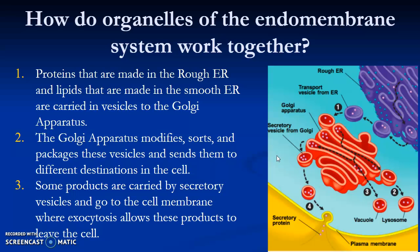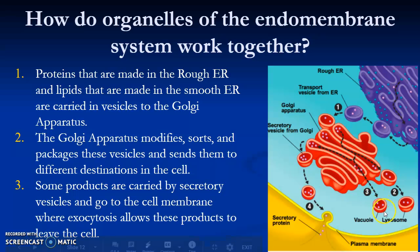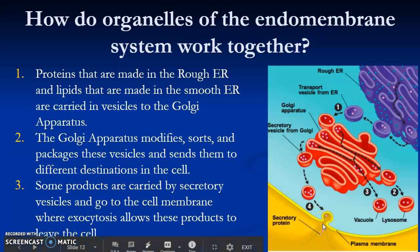Now that you've learned about all of these organelles, the question is: why are they relevant to the endomembrane system? It's teamwork — as they say, teamwork makes the dream work. The proteins made in the rough ER and the lipids made in the smooth ER are carried in transport vesicles to the Golgi. The Golgi then modifies, sorts, and packages those vesicles and sends them to different locations — to a vacuole for storage, or to a lysosome to digest the contents, or to the plasma membrane.